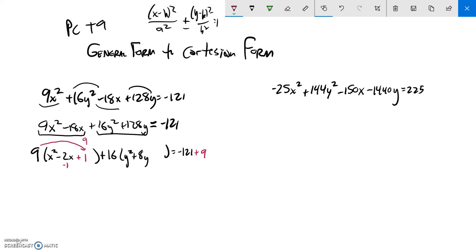And if I complete the square just in here, half of 8 is 4. 4 squared is 16. And now notice I added a 16 in there, but it's times 16, its actual value. So this is actually 256. So I'm going to have to add 256 to this side to balance it out as well.